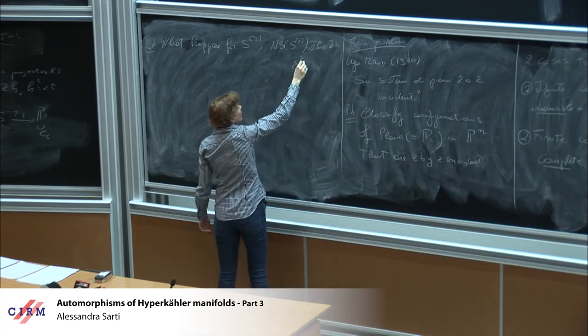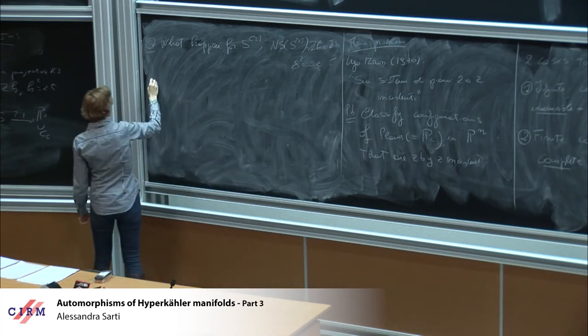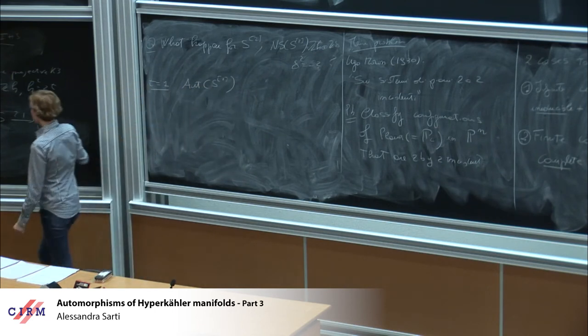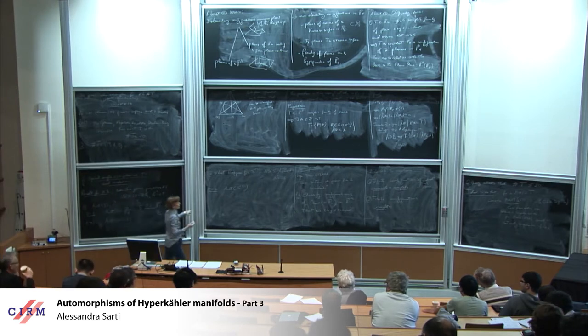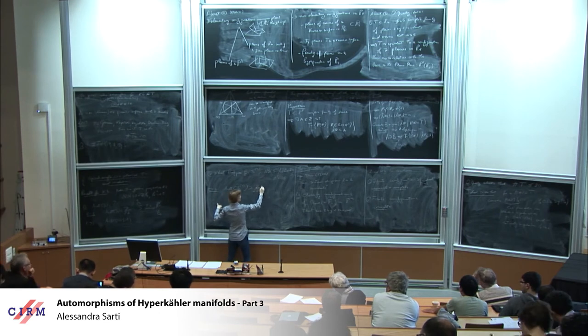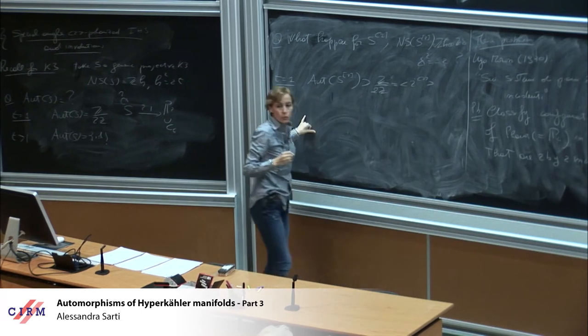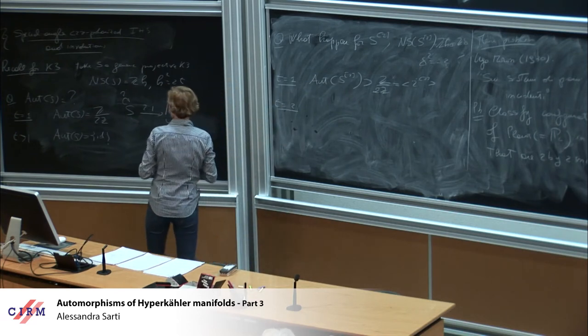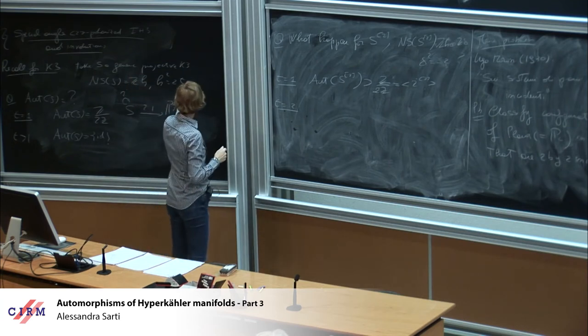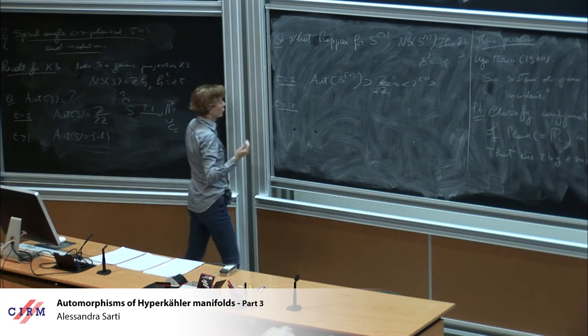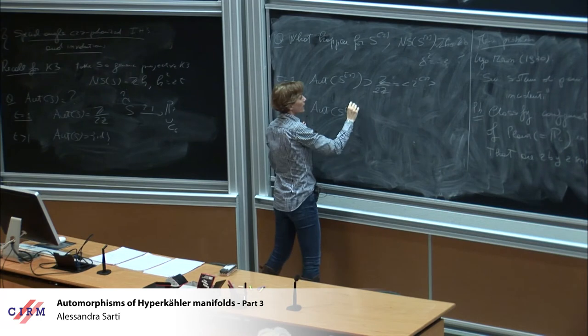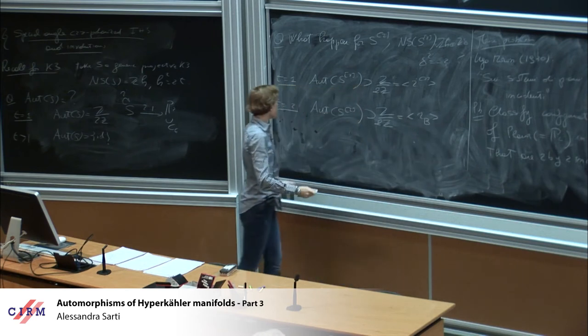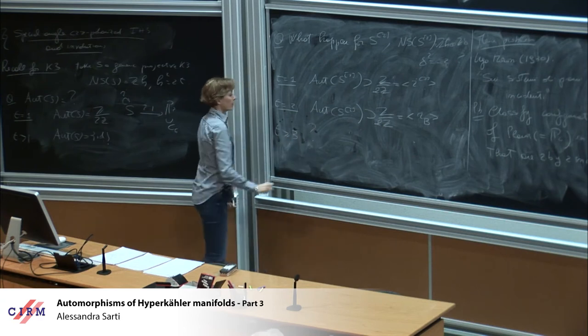And moreover, I will study the following question. So recall the following fact for K3. So take a generic K3 surface, projective K3. So this means that the Neron-Severi group of S is Z of H, H square equal to t. So what can one say about the automorphisms of S? So this is very well known. Well, if t is equal to 1, we have seen already several times in the lectures that we get K3 that are double covers of the plane. So Aut S is just Z modulo 2Z.